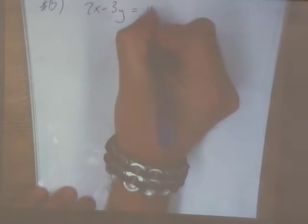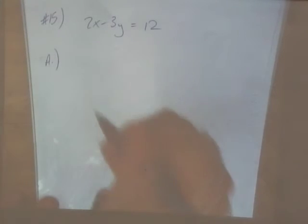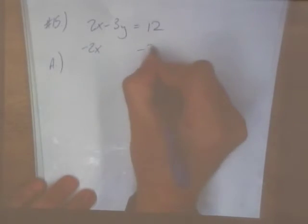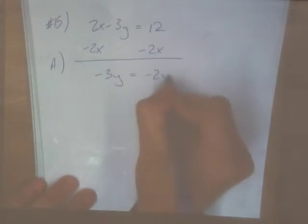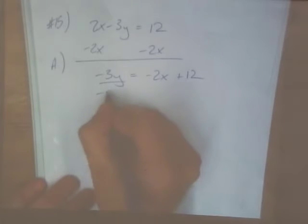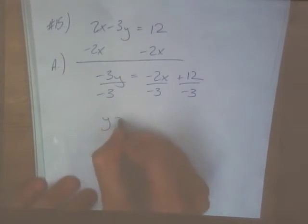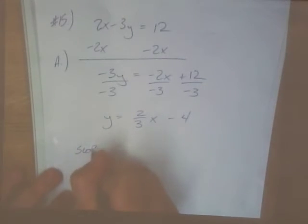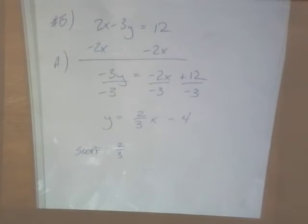Number 15. 2x minus 3y is equal to 12. They want to know part A, what's the slope? What form is this in right now? Standard form, isn't it? So how are we going to find the slope with this? What form should we put it in to find the slope? Put it in slope intercept, right? So we'll minus the 2x over, negative 3y is equal to negative 2x plus 12, and then divide everything by negative 3. So we get Y is equal to 2 thirds x minus 4. Okay, so what's my slope? 2 thirds. Is 2 thirds.